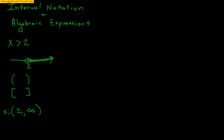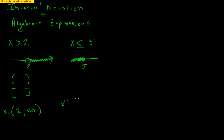An elementary kid might put a 3 right there, but we know there are plenty of numbers between 2 and 3. The parenthesis tells us not 2 — everything right after 2. Likewise, we can do something like x is less than or equal to 5. We're talking about all numbers underneath 5, and since it says 'or equal to,' we fill in 5 and shade everything underneath. So this time x can be anything starting at negative infinity all the way to 5 with a bracket.